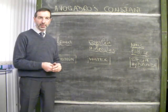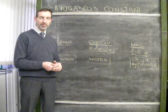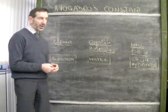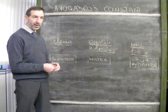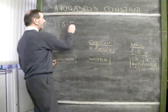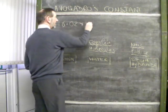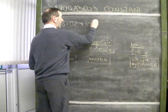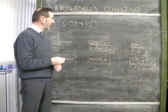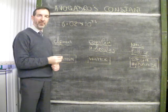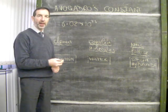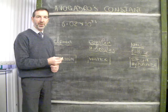Avogadro's constant tends to be the most difficult calculation for many higher pupils. The question is, what is it? Well, you might remember the number 6.02 times 10 to the power 23. You'll find that number on the last page of the data book. It's the number of bits of a substance in a mole.